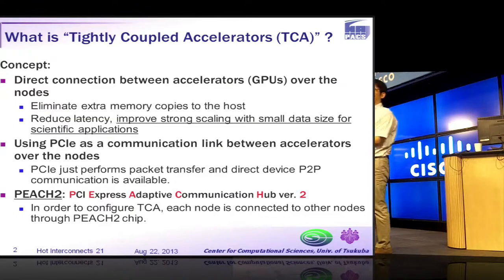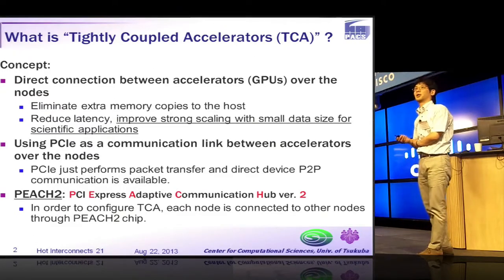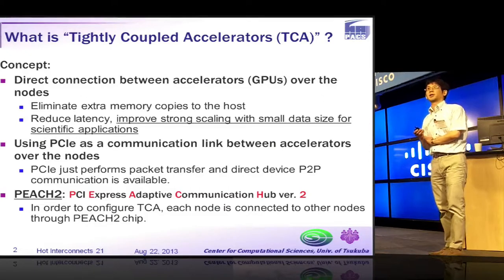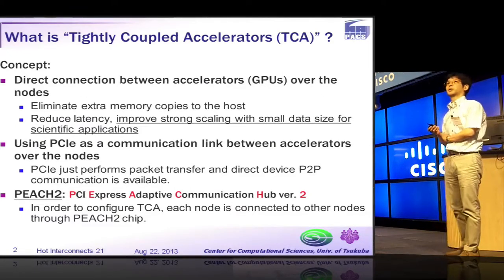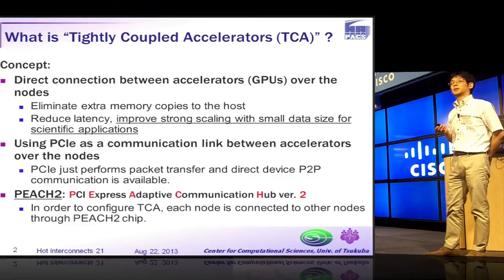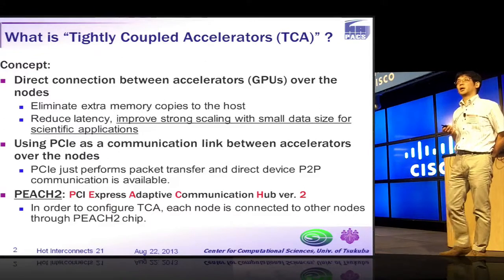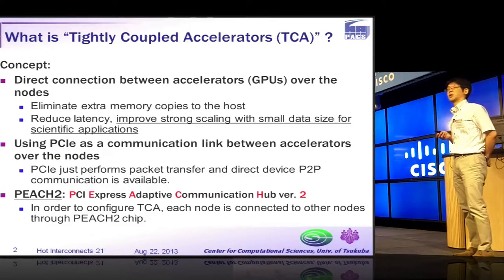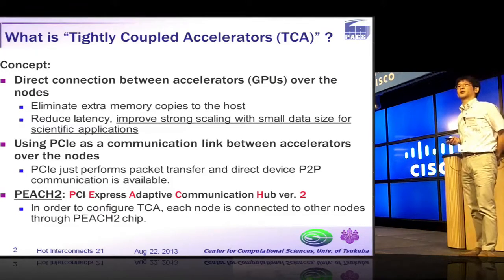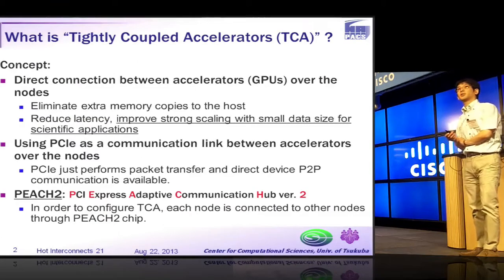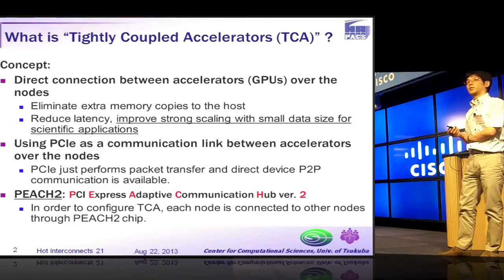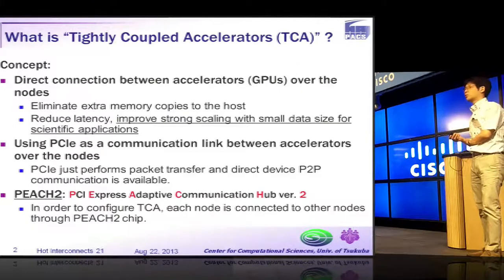I'm going to explain what is tightly coupled accelerators, in short, TCA. TCA is a concept proposed by us, and it is a direct connection between accelerators such as GPUs over the nodes. It can eliminate extra memory copies to the host, and so it can reduce communication latency and improve strong scaling with small data size for HPC applications. We use PCI Express as a communication link between accelerators over the nodes, because PCI Express just performs packet transfer and direct device P2P communication is available.